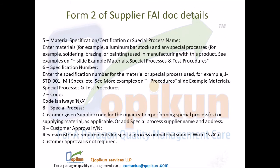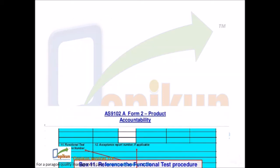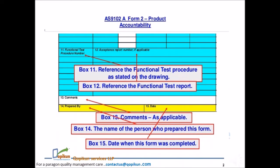Field 9 — customer approval yes or no: review customer requirements for special process or material source. Write not applicable if customer approval is not required. Box 11: reference the functional test procedure as stated on the drawing. Box 12: reference the functional test report. Box 13: comments if applicable. Box 14: the name of the person who prepared this form. Box 15: date when this form was completed.